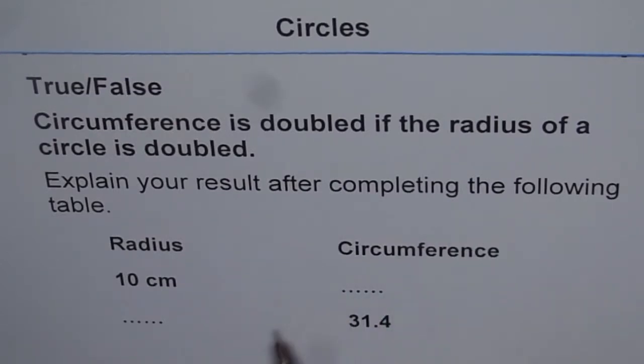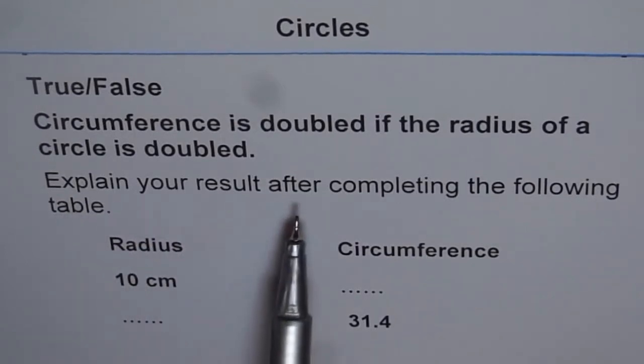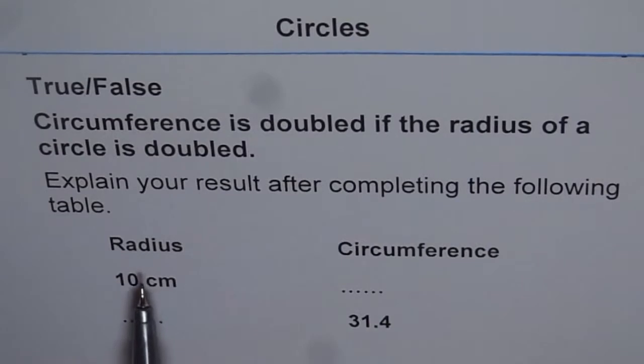And here is some data which can help you figure out. Explain your result after completing the following table. We will try to calculate circumference from radius or the reverse, from the circumference the radius, and see if there is a relation. I would like you to answer the question and then look into my suggestion.